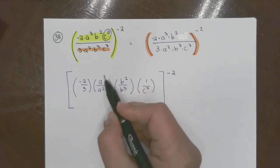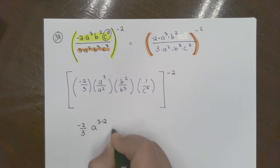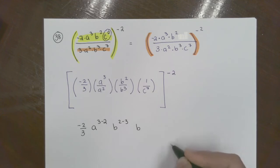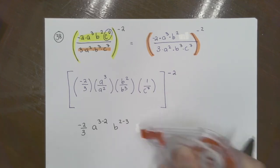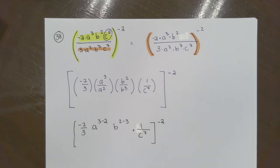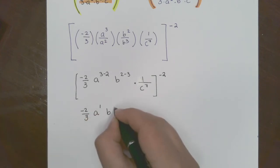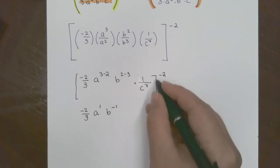So this is what we had. Then we had a cubed over a squared, then we had b squared over b cubed, then we had that one that disappeared. We can put it here if we want, or you can just leave it blank. It's just multiplying by one. Now what happens when we are dividing? What do we do with the exponents? Subtract.